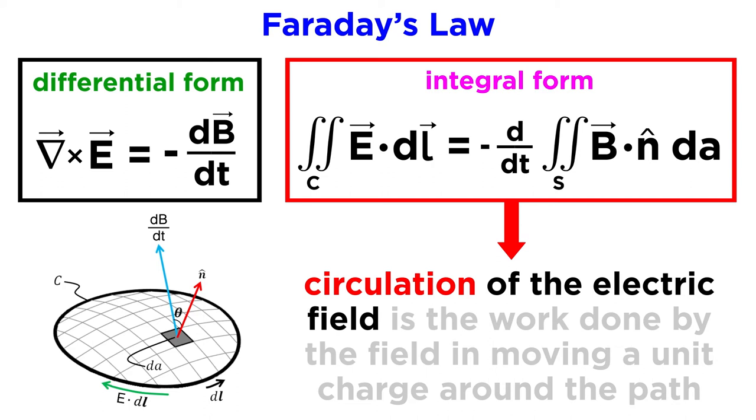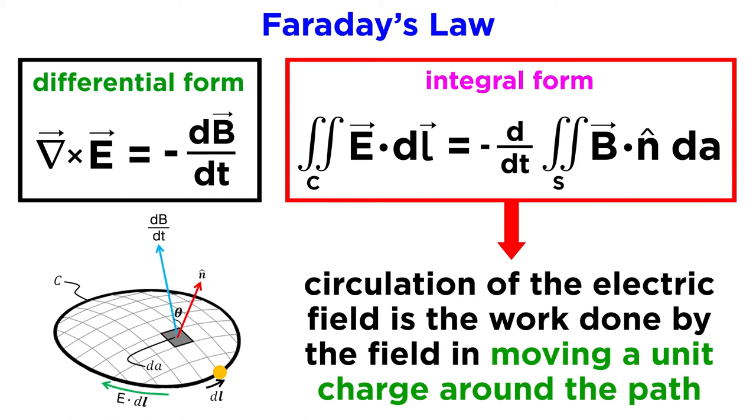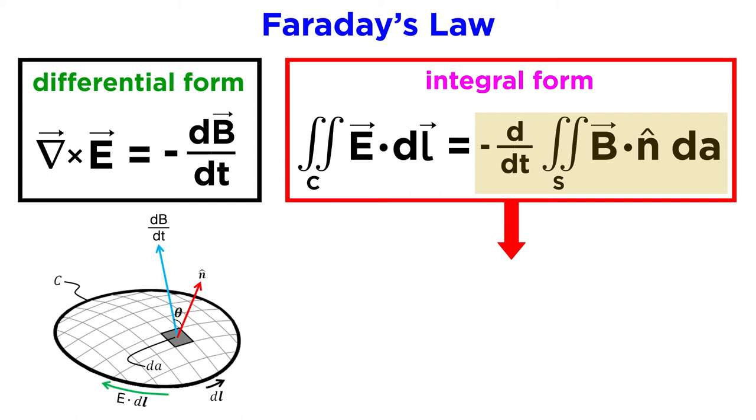What then is the circulation of the electric field around a path? It is just the work done by the electric field in moving a unit charge around that path.